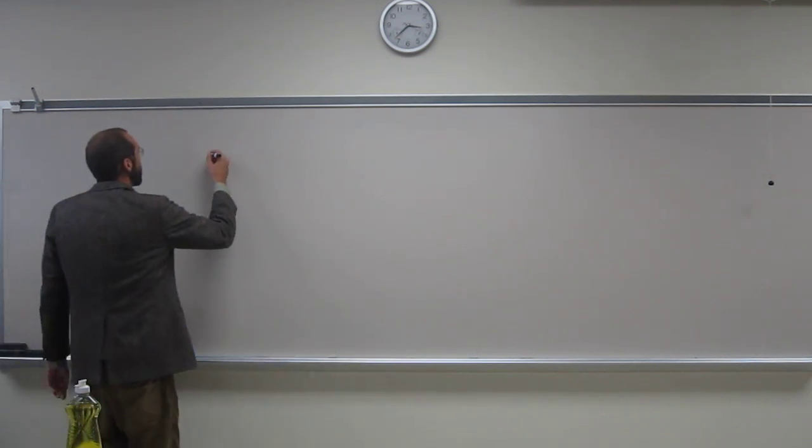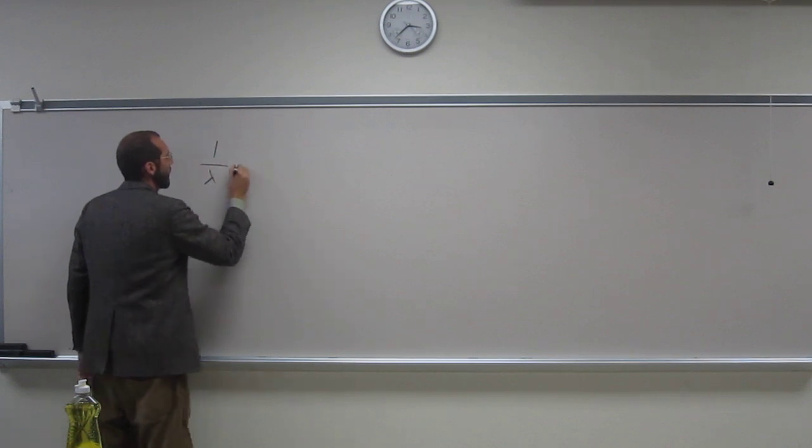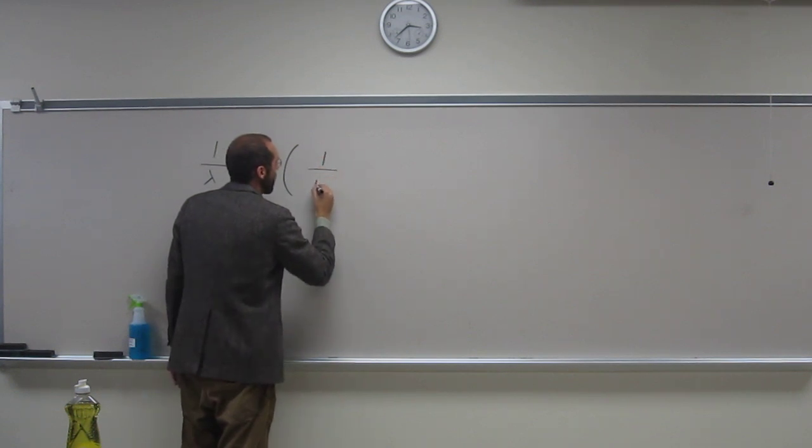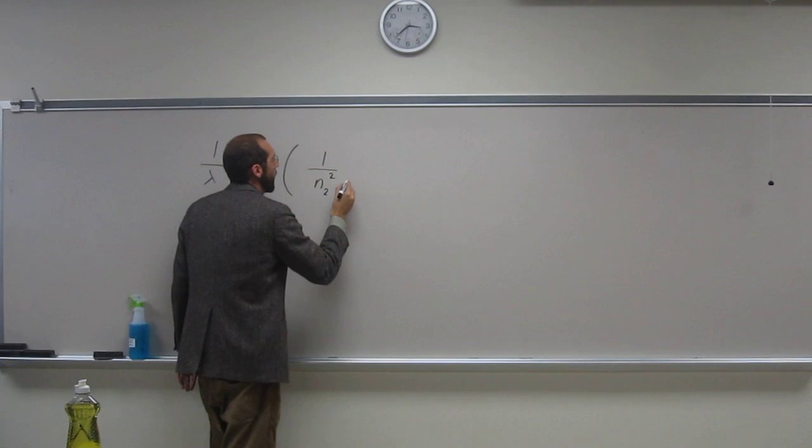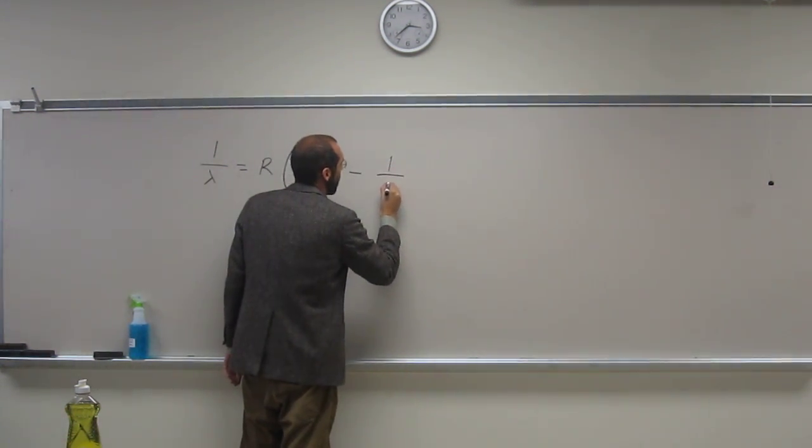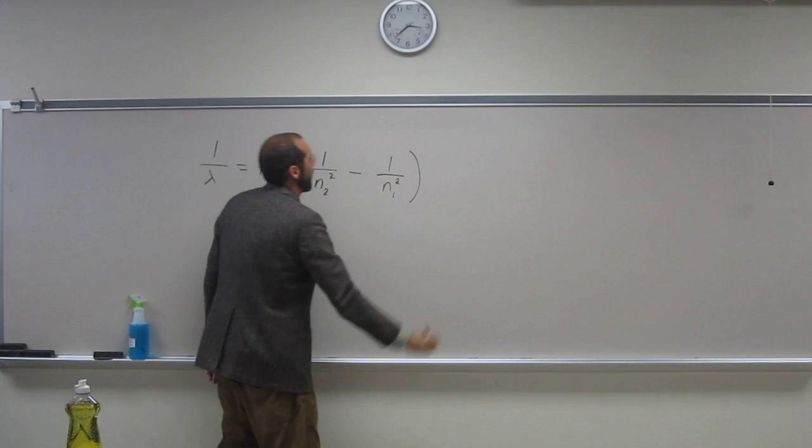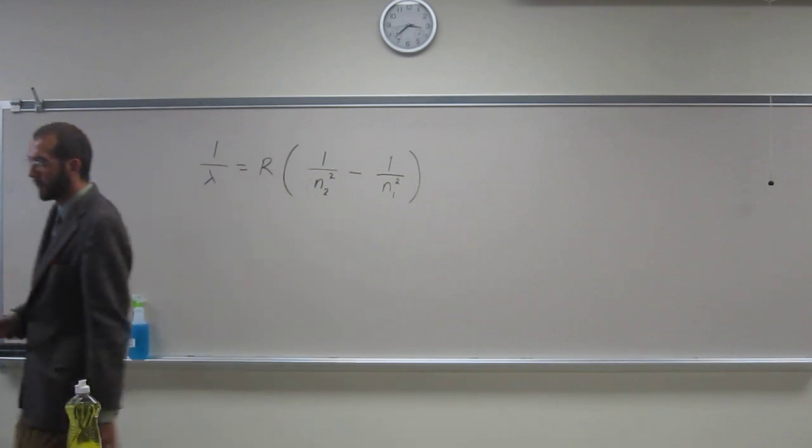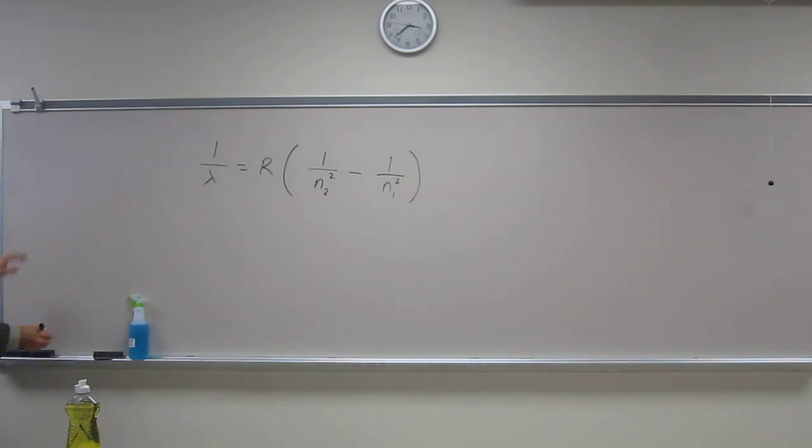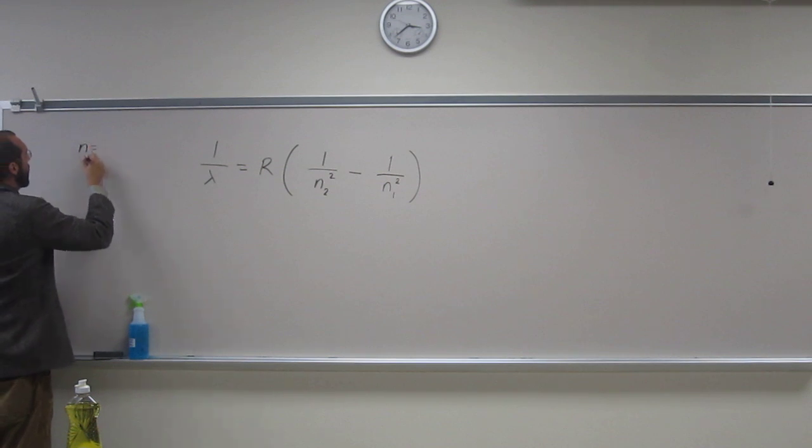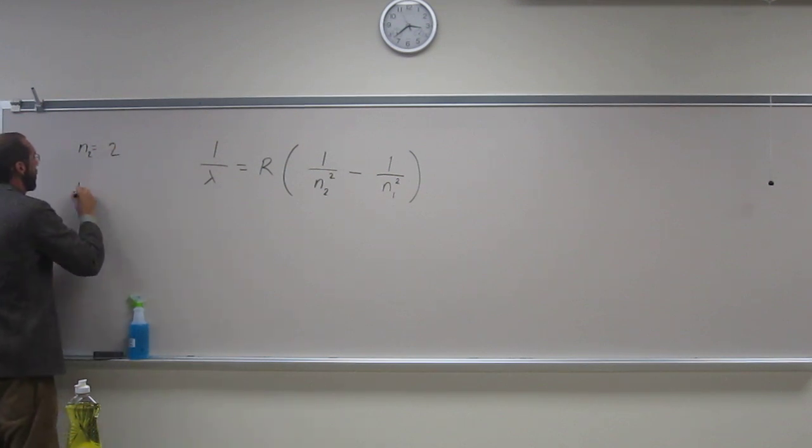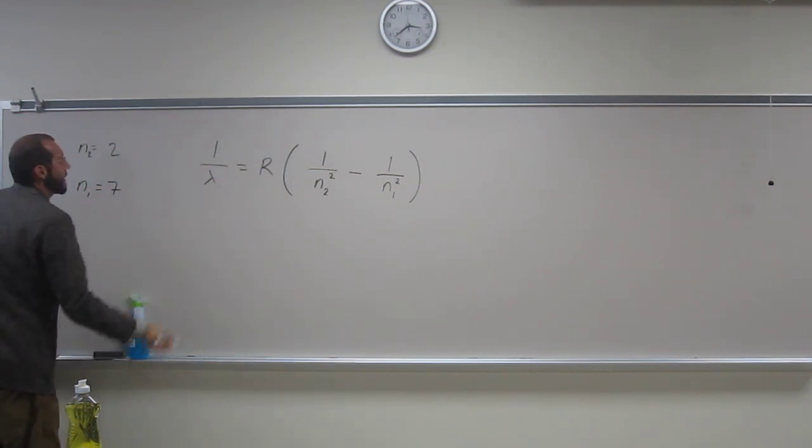Of course, first you've got to remember the Rydberg equation. So it's going to be 1 over wavelength equals R times 1 over N2 squared minus 1 over N1 squared. You also know the Rydberg constant and what they give you. N2 is 2, and N1 is 7.